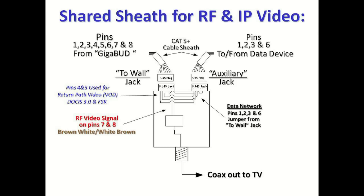Looking more closely at the Gigabob: the Ethernet pins jump from the 'to wall' jack to the auxiliary jack, while the RF on pins 7 and 8 is fed into the patented automatic gain control circuitry and then to the coax terminator. With a coax patch cable, you can connect to your display. Pins 4 and 5 only come into play when there is a need for return path video or video on demand — the most common platforms being FSK or DOCSIS 3.0.